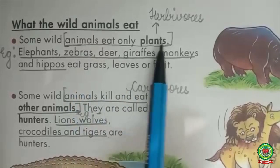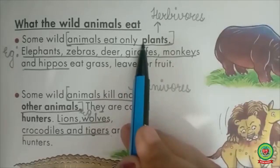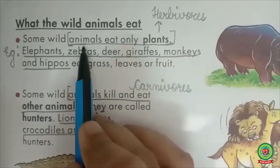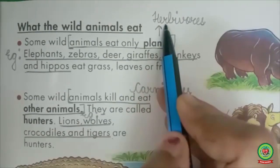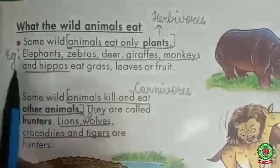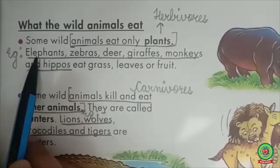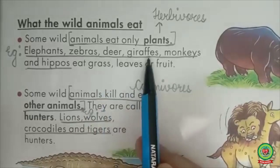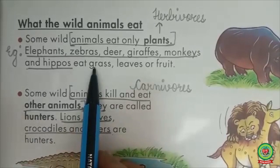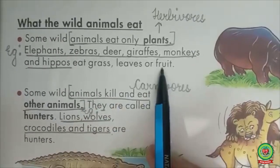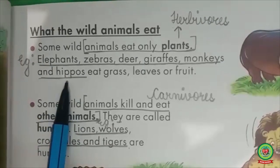Some wild animals eat only plants. Now underline the line: 'Animals eat only plants.' Animals who eat only plants are known as herbivores. Elephants, zebras, deer, giraffes, monkeys, and hippos eat grass, leaves, or fruits. These are some examples of herbivores.